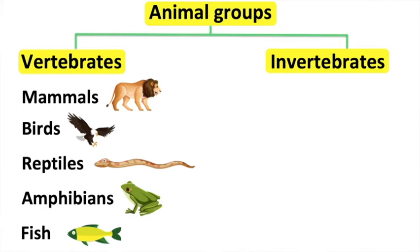Amphibians have damp skin. First they use their gills to breathe, and then lungs. Amphibians lay soft eggs in water and their body temperature changes; therefore, they are cold-blooded animals. For example, a frog.